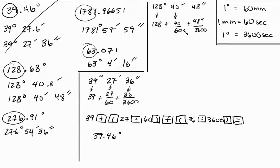128, plus, open parentheses, 40, divided by 60, close parentheses, plus, open parentheses, 48, divided by 3600, close parentheses, equal, or enter. You should get 128.68 degrees, right? That's exactly what we got before. So we're done with that one.